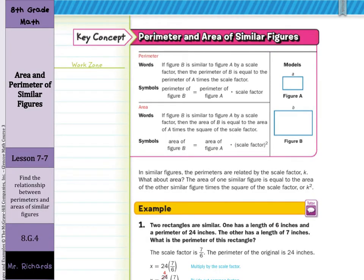Now our key concept, perimeter and area of similar figures. For perimeter, if figure B is similar to figure A by a scale factor, then the perimeter of B is equal to the perimeter of A times the scale factor. And we'll get into examples of this in a moment. In the previous question, the scale factor was 1 half. And so the perimeter of the smaller square was 1 half the perimeter of the larger square. Now for area, if figure B is similar to figure A by a scale factor, then the area of B is equal to the area of A times the square of the scale factor. And we'll get into examples of this in a moment.